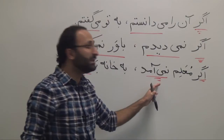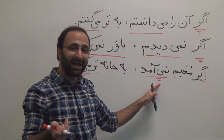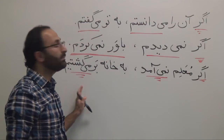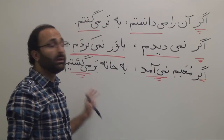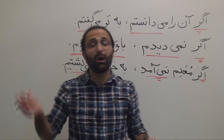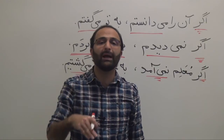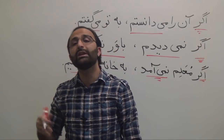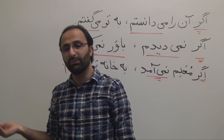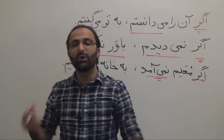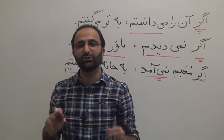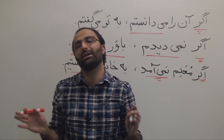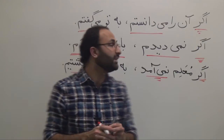اگر نمی آمد بخانه برمی گشتیم. The teacher came, and we didn't go back home. So it's a kind of impossible situation, because we cannot change the situation.